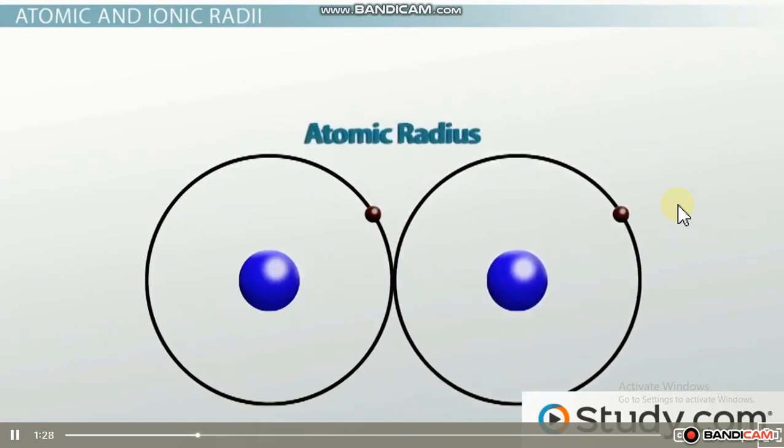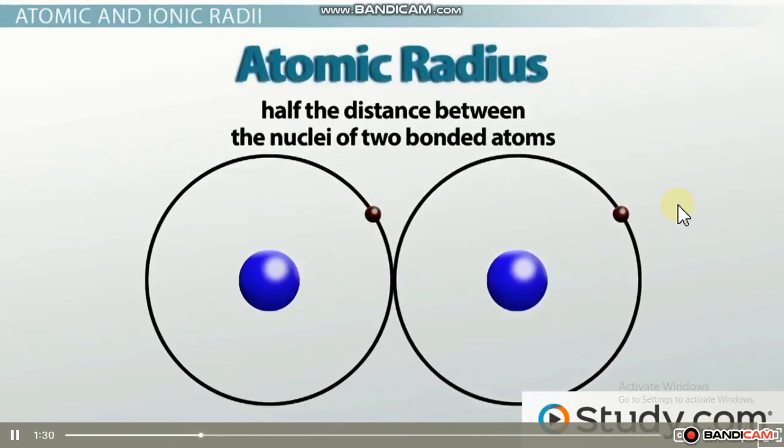Typically, the atomic radius is measured as half the distance between the nuclei of two bonded atoms. This measured radius is often slightly smaller than an atom's actual radius, but because the nucleus of an atom is very well defined and easy to detect, this measurement is most often used.